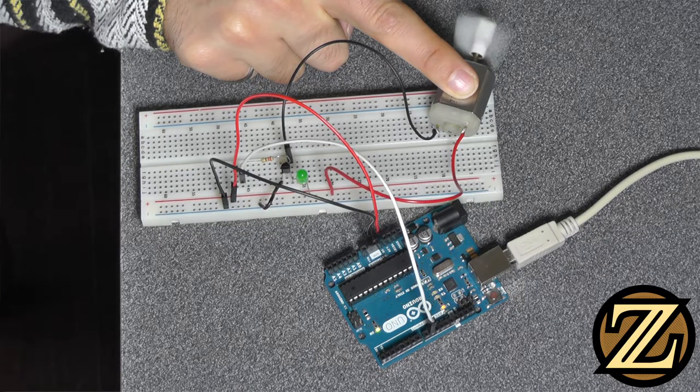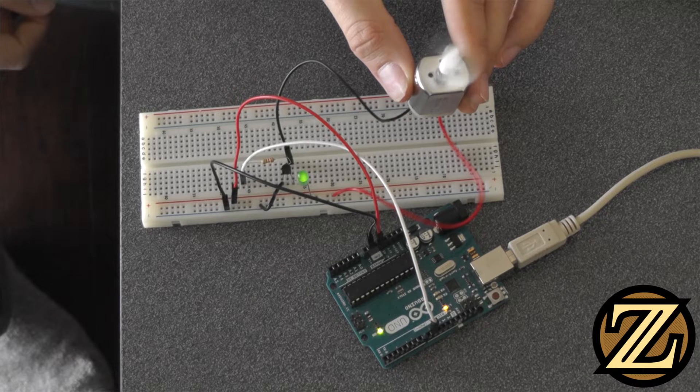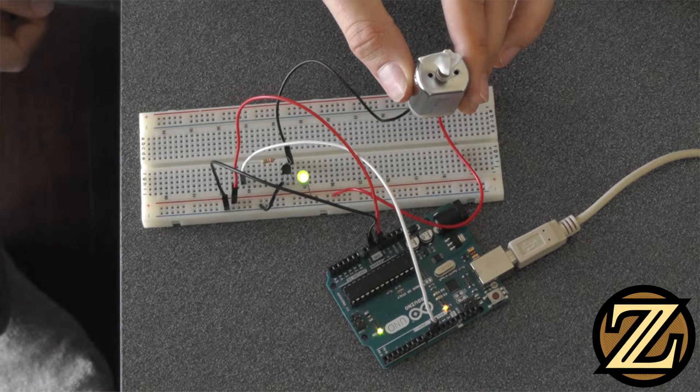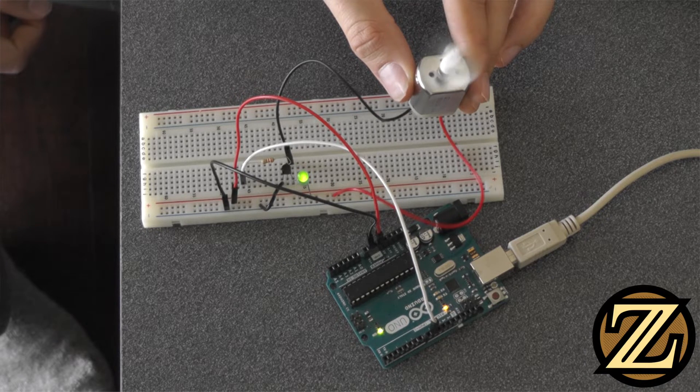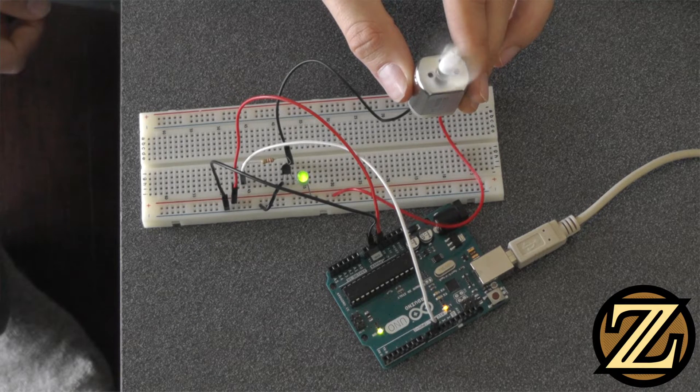So we can see that our motor first doesn't start due to not enough potential being applied. This happens when our intensity value is low. Once enough potential is applied it winds up and continues to speed up as we increment our intensity value to 255.